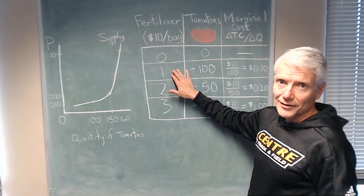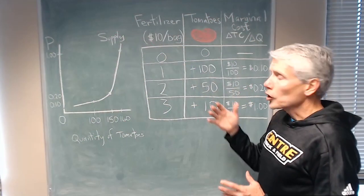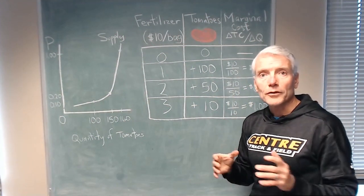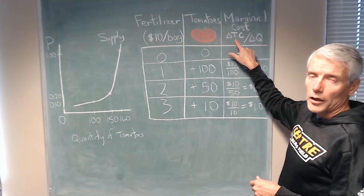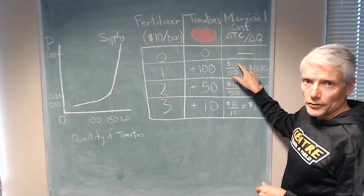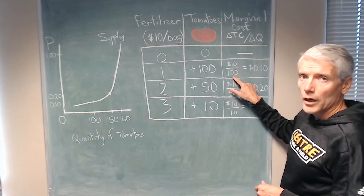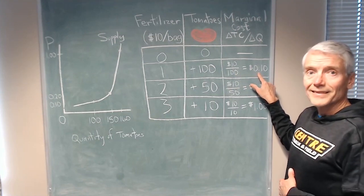The first bag, which costs $10, adds 100 tomatoes to the crop. The marginal cost of those 100 tomatoes, that additional cost, is the change in total cost divided by the change in quantity. So, $10 spent on fertilizer gets 100 tomatoes, so the additional cost per tomato is 10 cents.